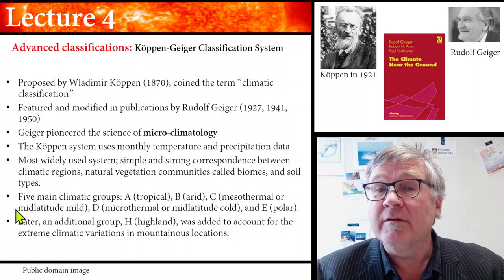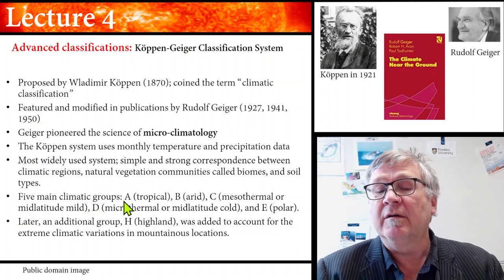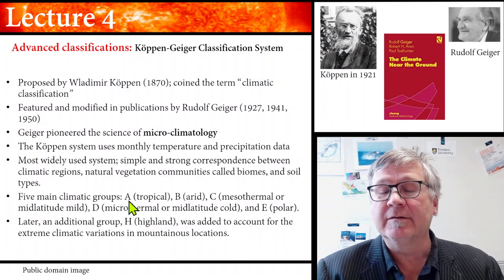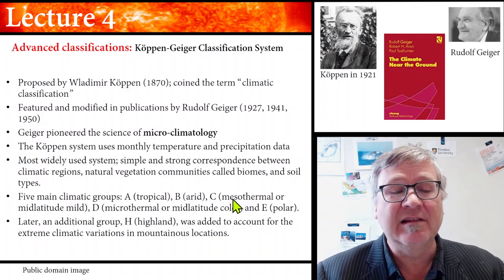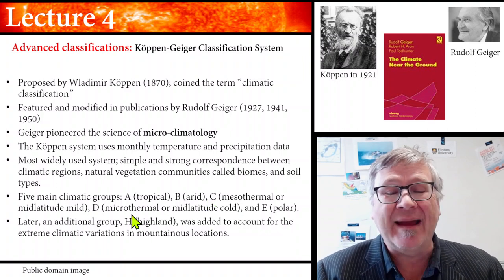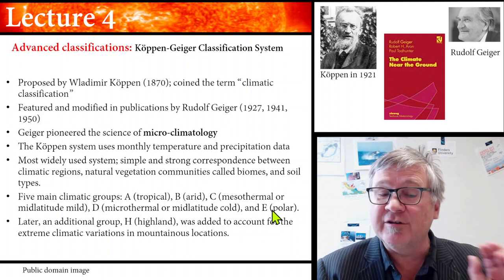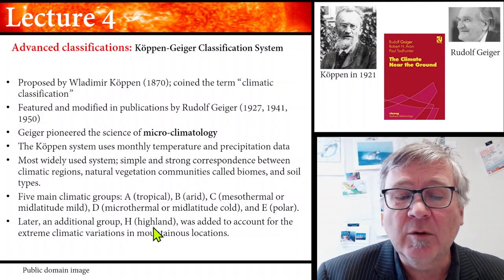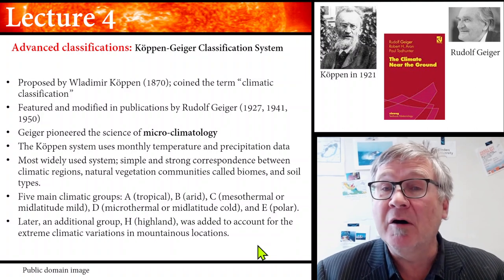The Köppen system has five main climatic groups. A is the tropical zone, B is the arid zone, C is the mesothermal or middle latitude zone, D is the mid-latitude cold or microthermal zone, and E is the polar zone. Later, an additional group H for highland was added to account for the extreme climatic variation in mountain regions.